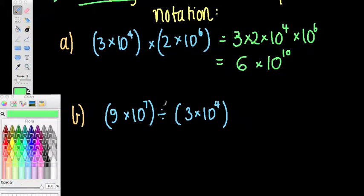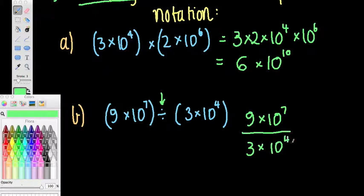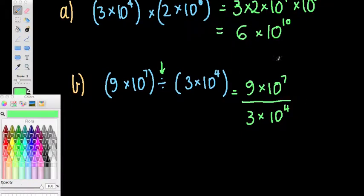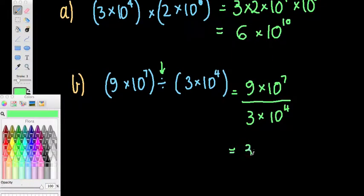This one down here, have a look. We've got a division symbol here. So I'm actually going to rewrite this the way I always do and that is in a fraction form like that. 9 over 3, well, that's equal to 3. Same base here. This is being divided. So what do we do? We subtract the indices. 7 minus 4. So we get 3 by 10 to the power of 3.